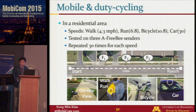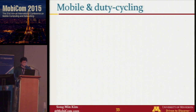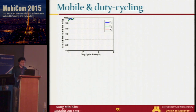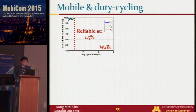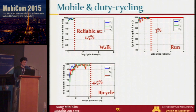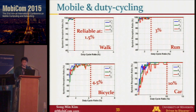We evaluate the mobile and duty cycling scenario where receivers move at different speeds: walking, running, on a bicycle, and in a car at up to 30 miles per hour. A Freebie symbol can be reliably delivered at walking speed if the receiver RF is turned on for only 1.5% of the time, increasing to 3% when running, 4.5% for a bicycle, and up to 10% for a car.